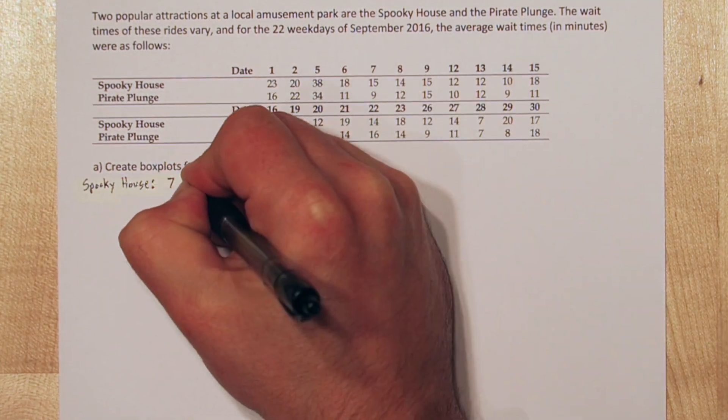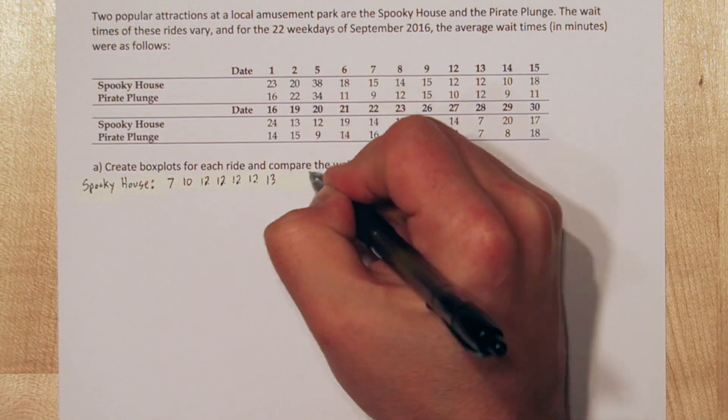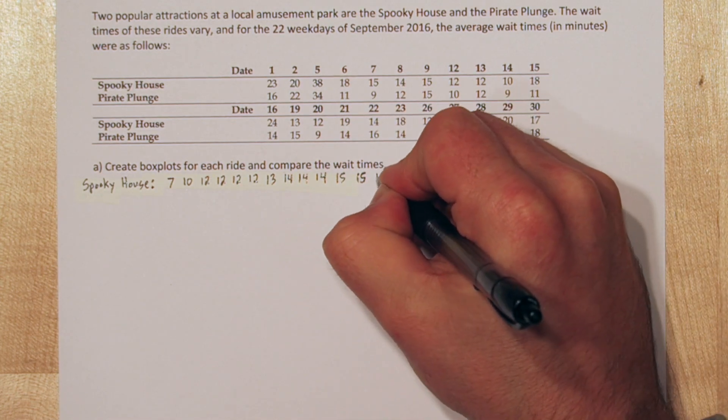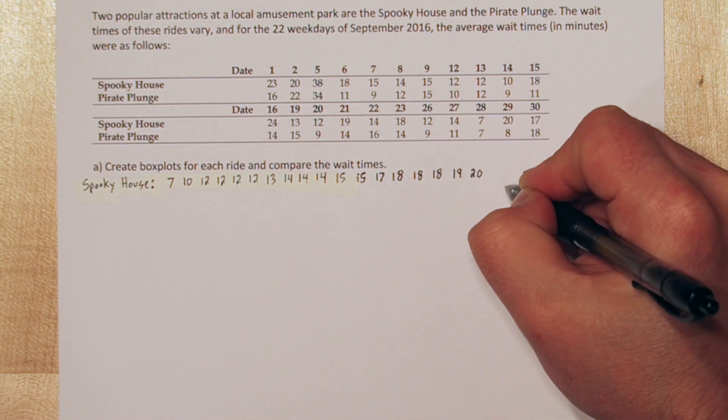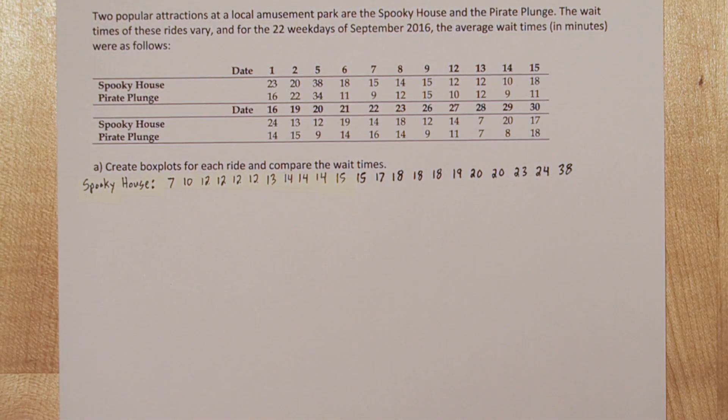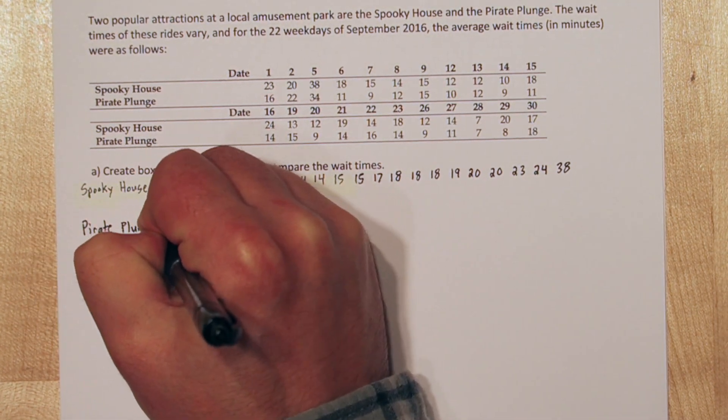The first step to creating box plots is to first list all the data in order from least to greatest. So let's list all the spooky house waiting times from least to greatest. Now let's do the same thing for Pirate Plunge.